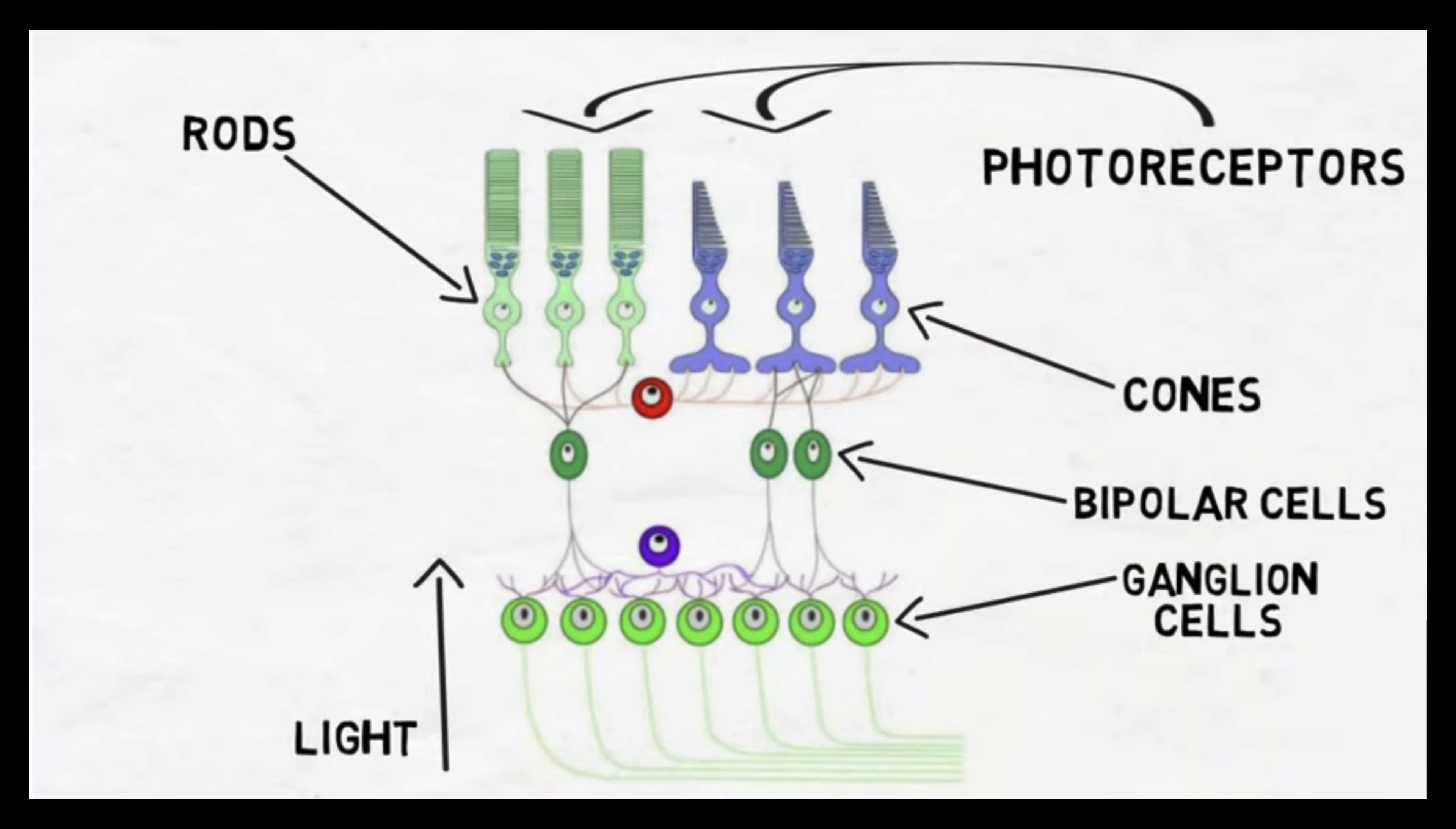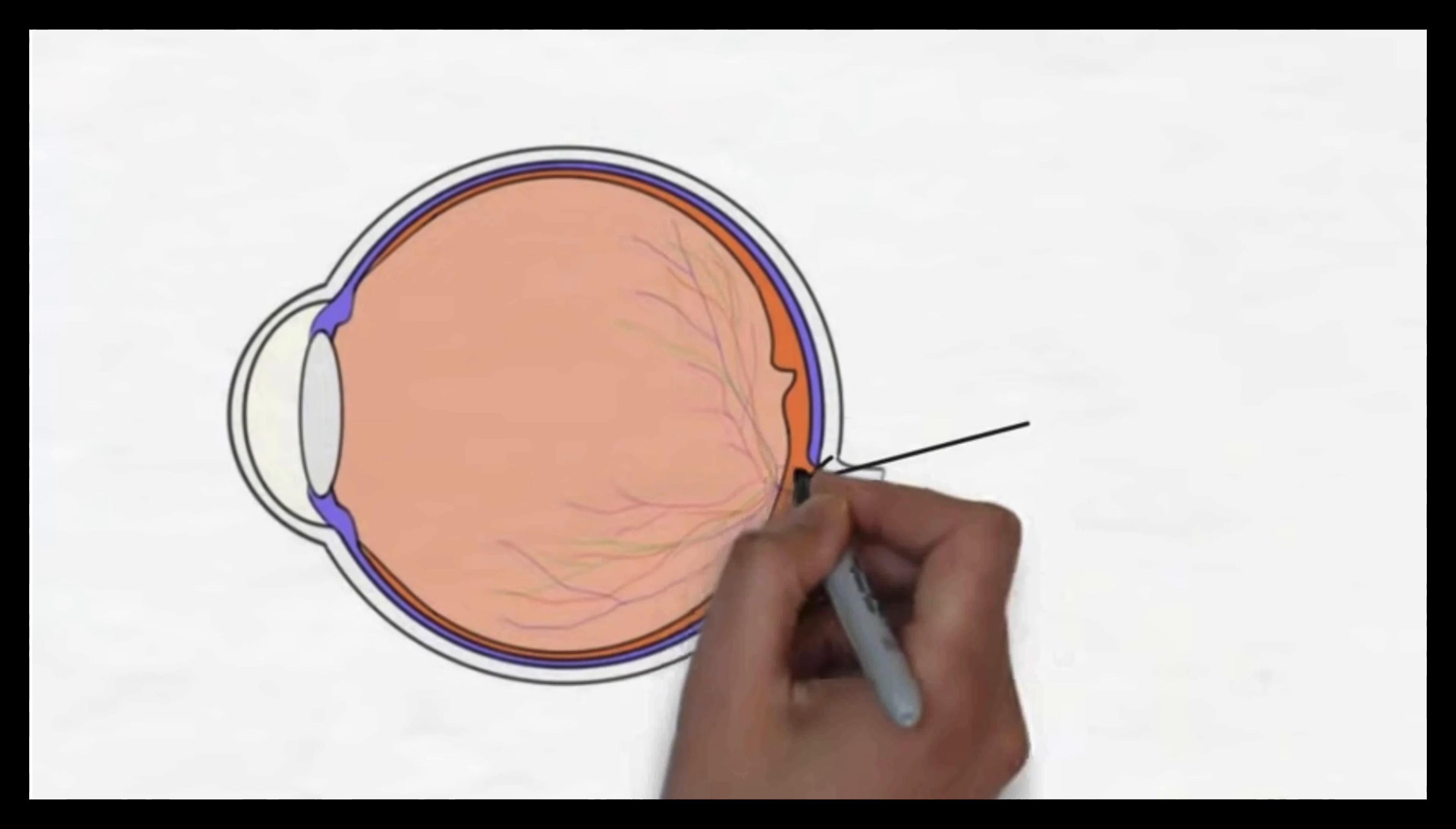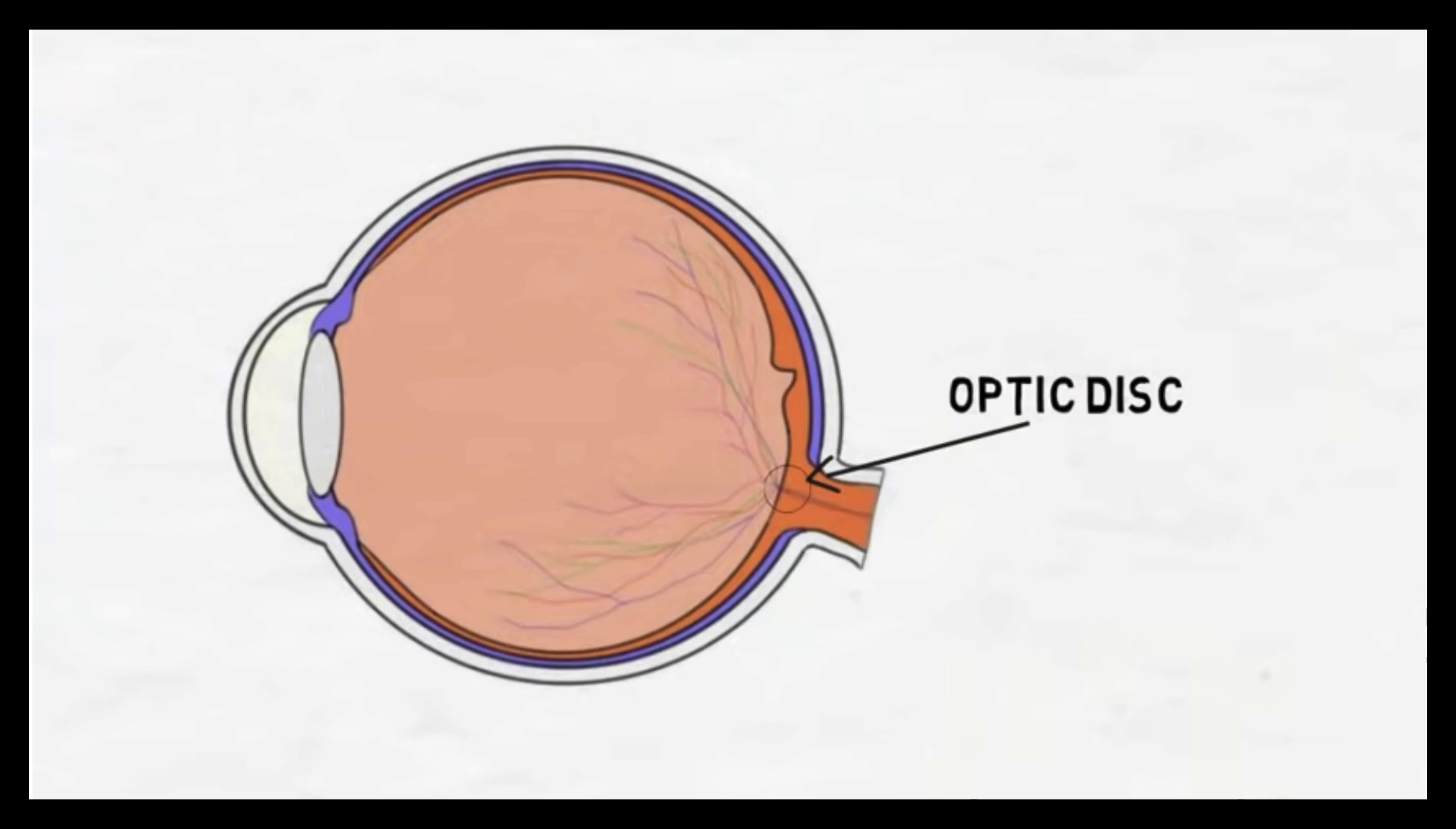Bipolar cells pass the signal on to ganglion cells, which leave the eye in a large cluster at an area called the optic disc. The optic disc doesn't contain any photoreceptors and so represents an area of the retina that can't process visual information, creating a natural blind spot.